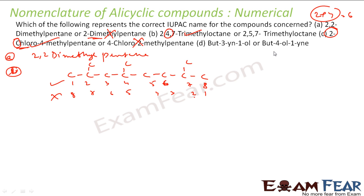Similarly, in option D we have an -ol (alcohol) and an -yne (alkyne). The alcohol is a principal functional group, so it should receive the lower locant and come last in the name. Therefore the option that places the alcohol as the primary functional group is correct. Hope you understand this.